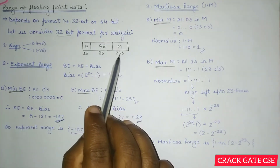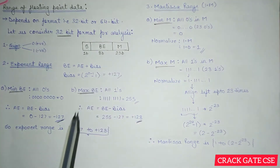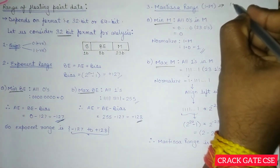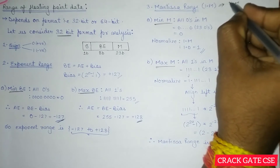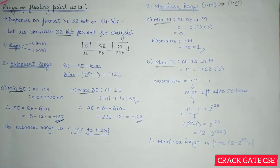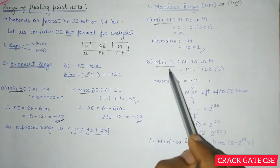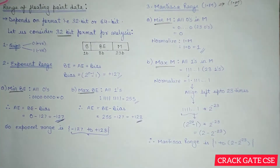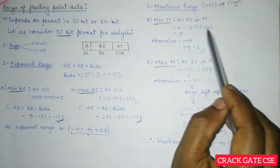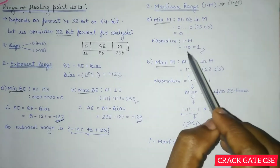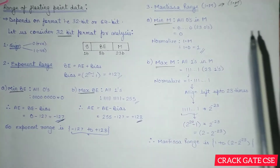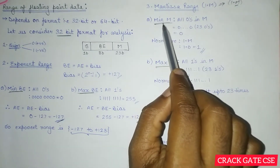Now we find the range for the mantissa. In normalized form there is a leading one followed by the mantissa fraction part. For the minimum mantissa case, all 23 bits are zero, so the value is 1.0 = 1. This is the minimum normalized mantissa value.